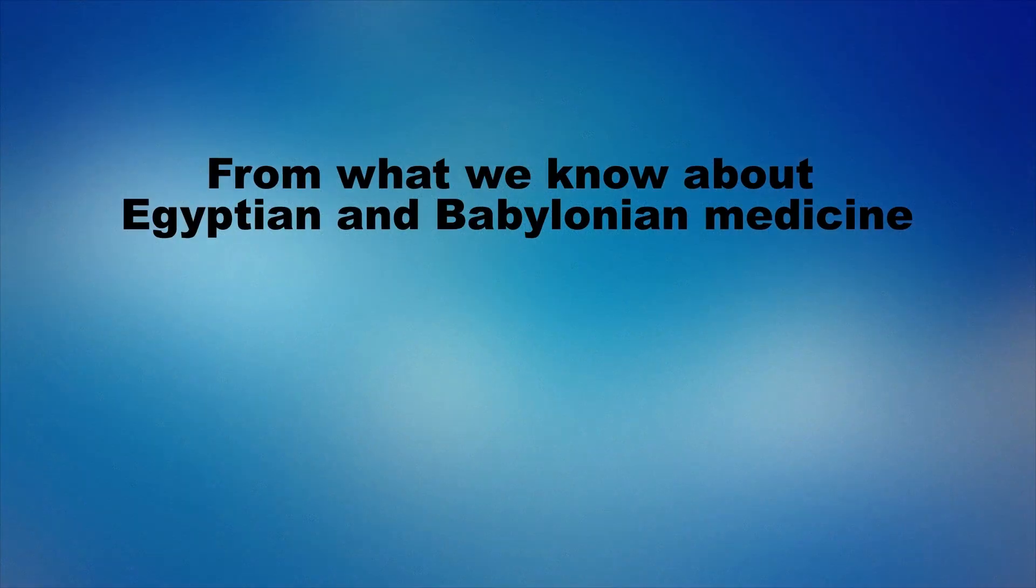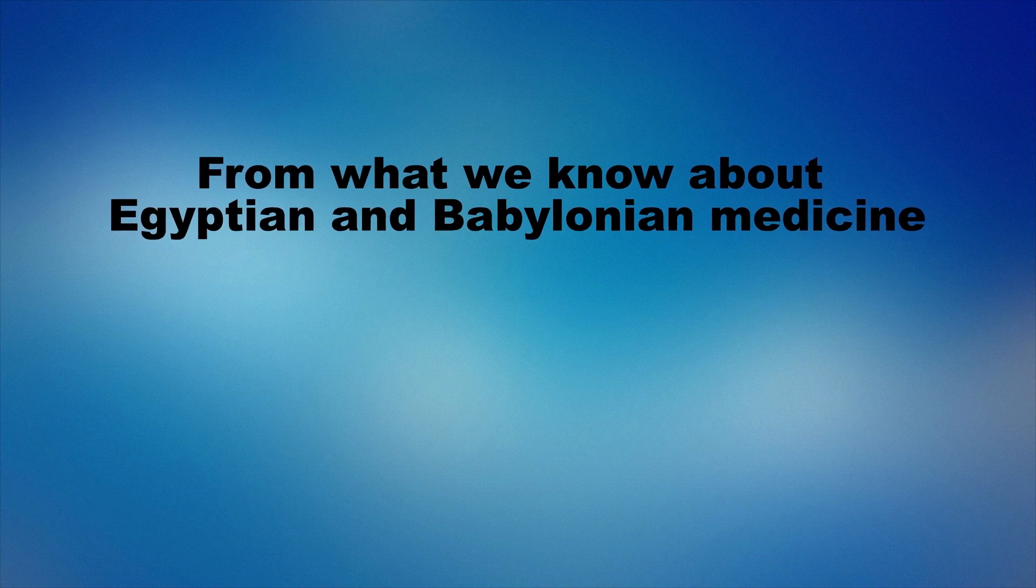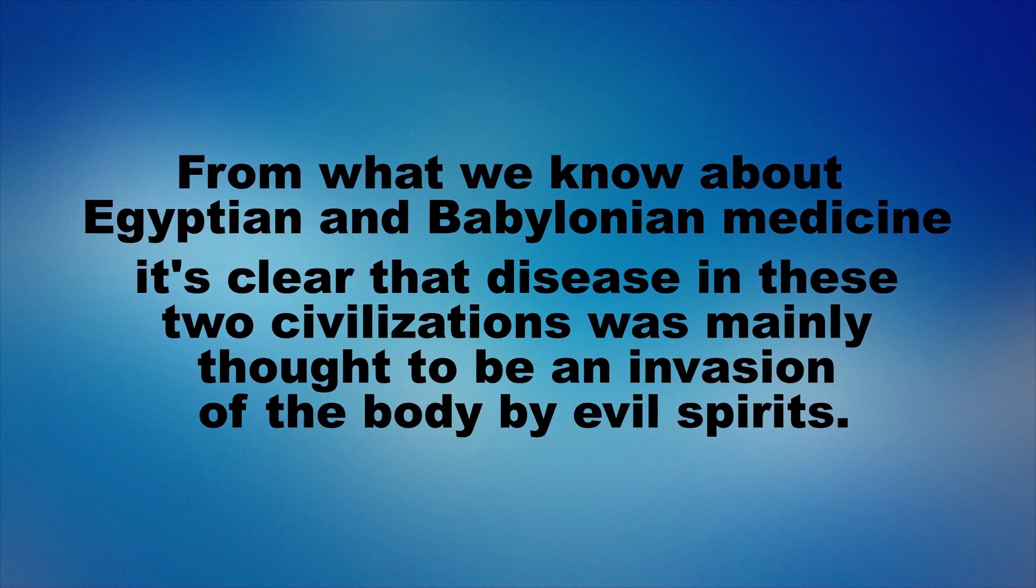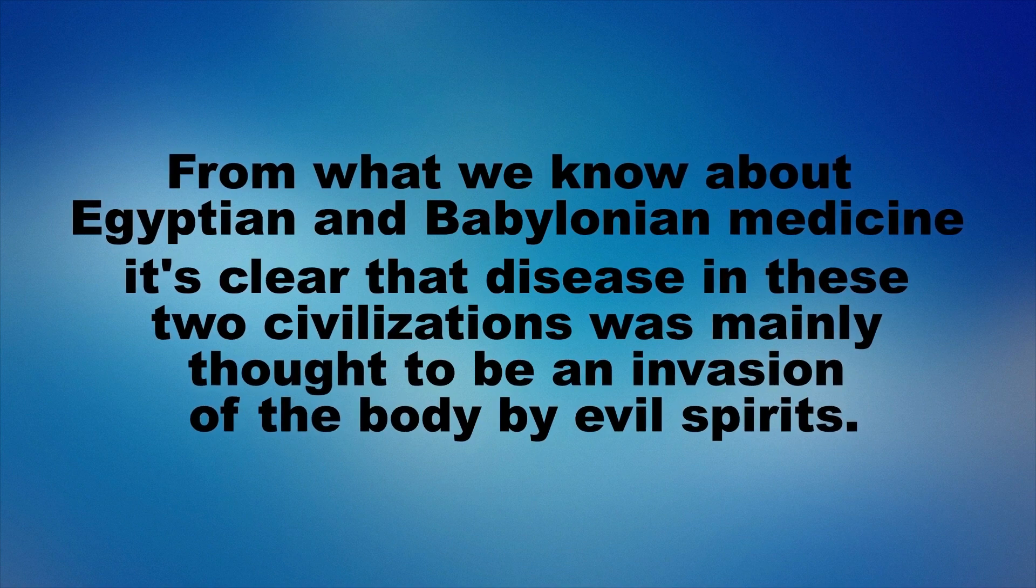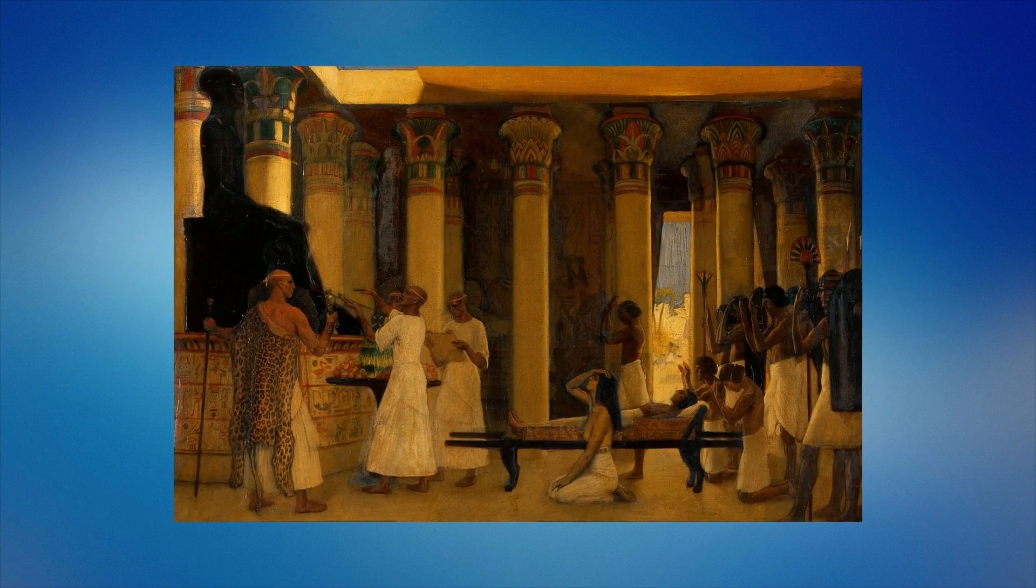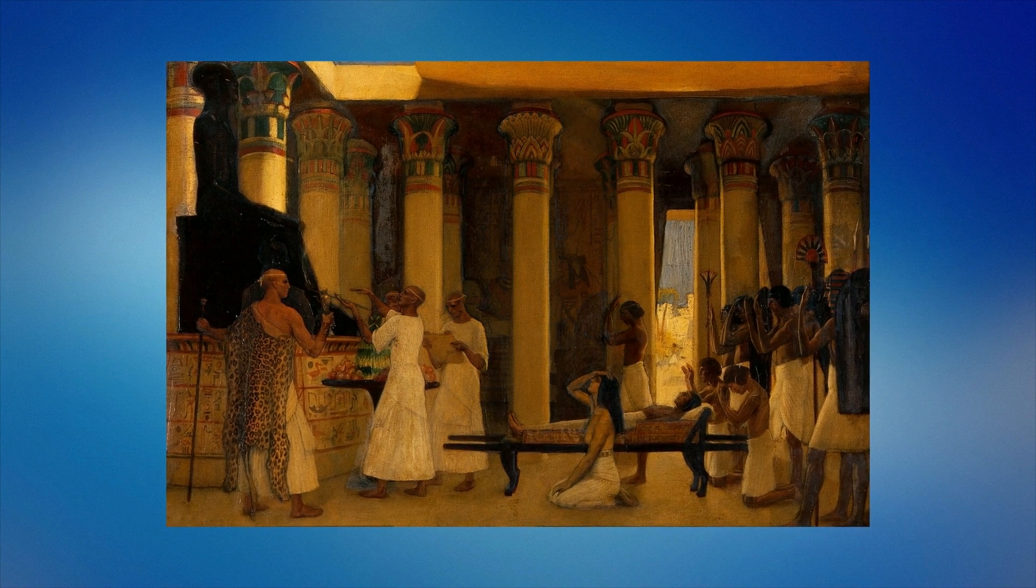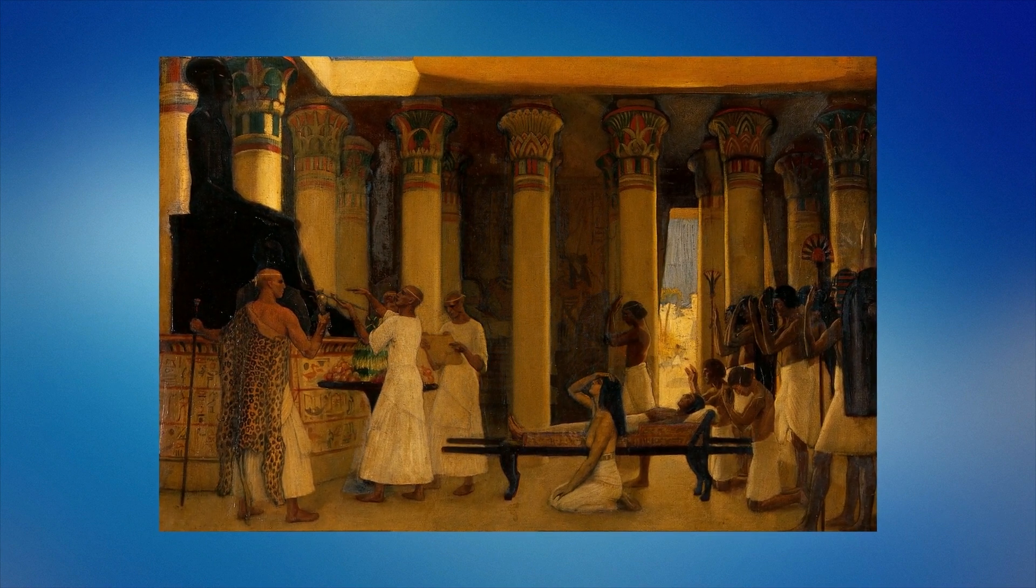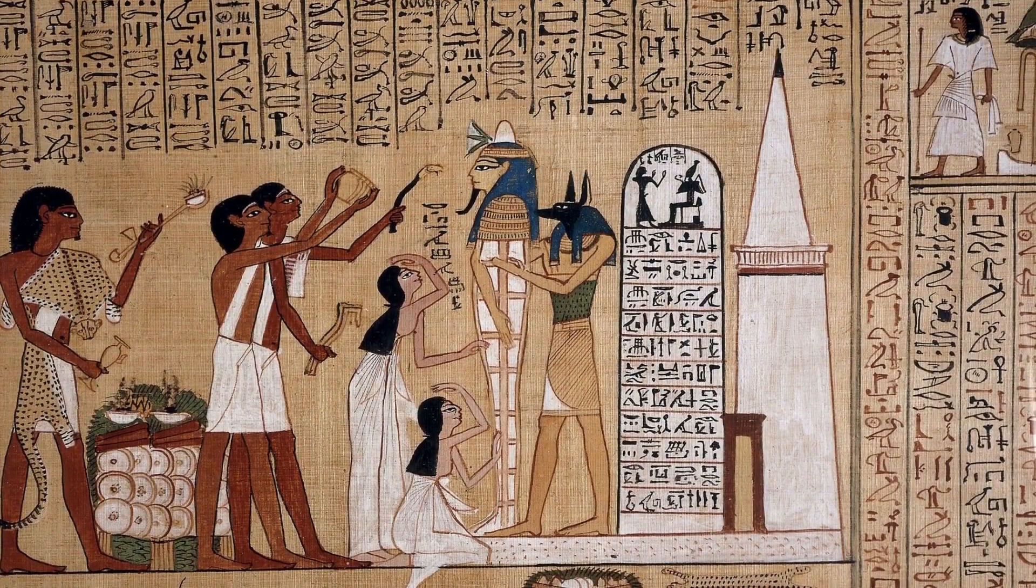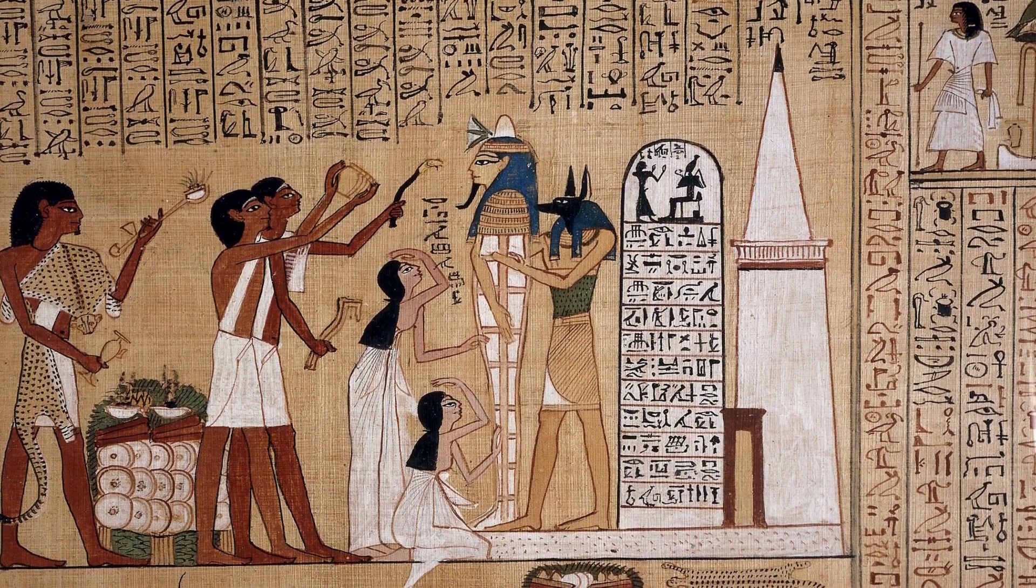From what we know about Egyptian and Babylonian medicine, it's clear that disease in these two civilizations was mainly thought to be an invasion of the body by evil spirits. Cure was to be gained by rituals designed to appease or frighten the spirits, as well as through incantation and exorcism, and Egyptian and Babylonian healing was therefore closely tied with ancient magic and religion.